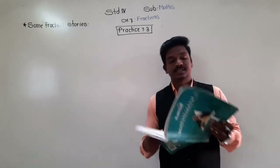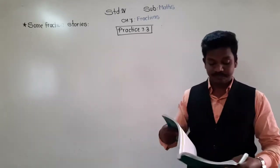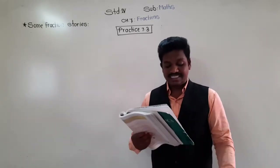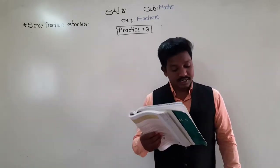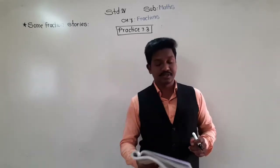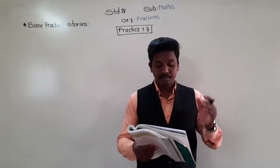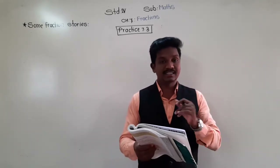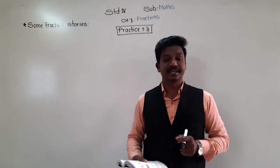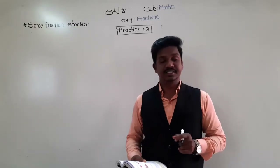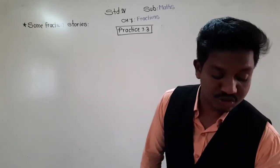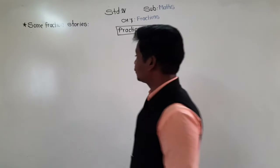Now see the first story or first word problem: seven chocolates are to be equally divided between Mona and Sona. How much will each get? Seven chocolates are there — I am drawing pictures of seven chocolates here.